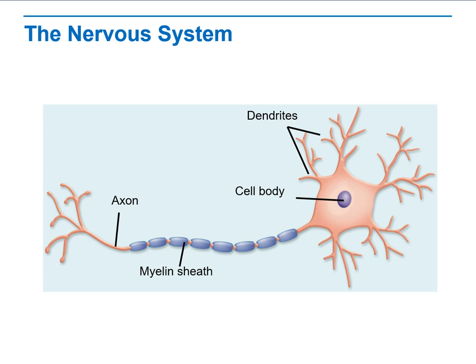Now, we have dendrites. Dendrites at the front are called simply dendrites, and the ones at the end are called terminal dendrites. They are responsible for transferring the nerve stimuli from one neuron to the other.